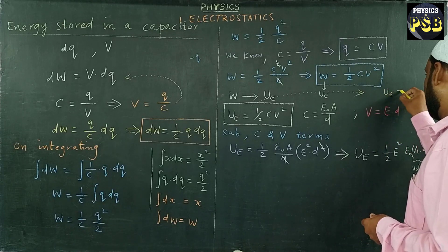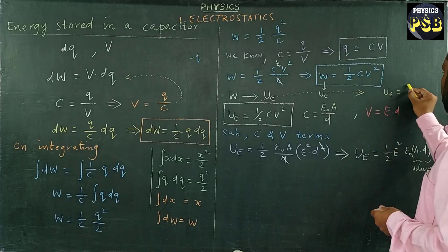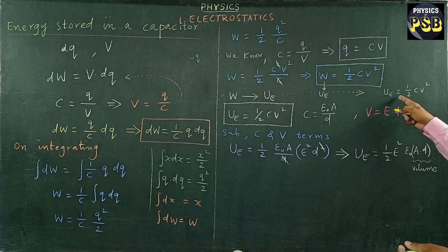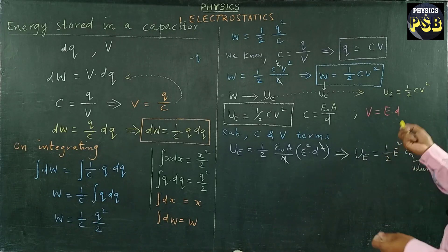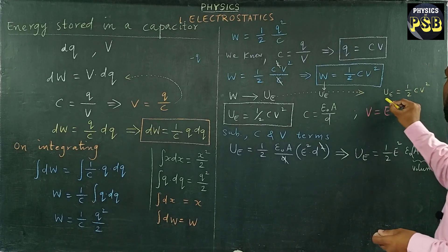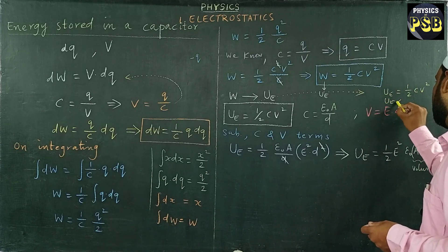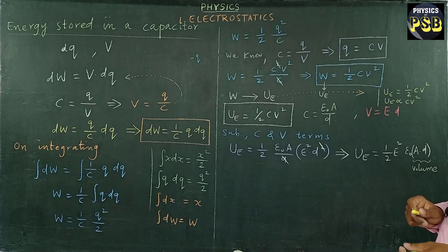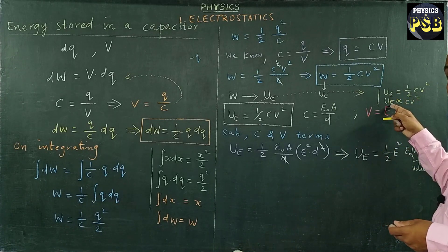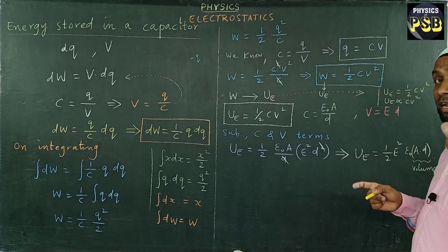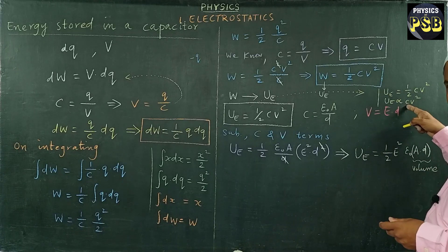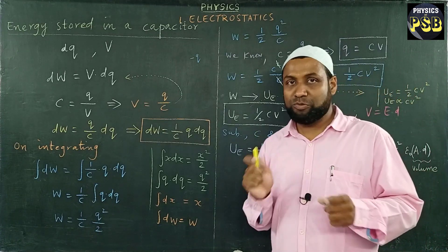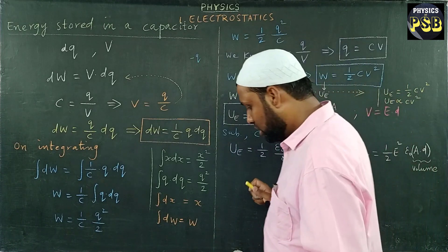Here half is a numerical constant. When we replace the equal sign with a proportionality, this can be written as UE directly proportional to CV². This shows that the electrostatic potential energy stored in a capacitor is directly proportional to capacitance C, and also directly proportional to the square of electric potential, V².